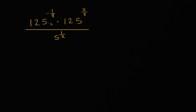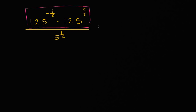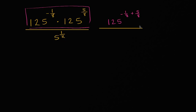The first thing that jumps out at me is the numerator. I have 125 raised to the 1/8th power times the same base, 125 raised to the 5/8th power. So I can rewrite this numerator using exponent properties as 125 to the sum of these two exponents — to the negative 1/8 power plus 5/8 power — all over the existing denominator, which is 5 to the 1/2.